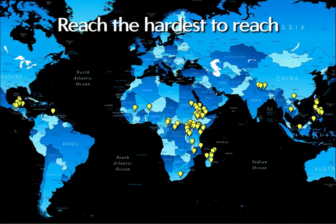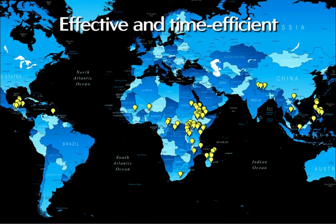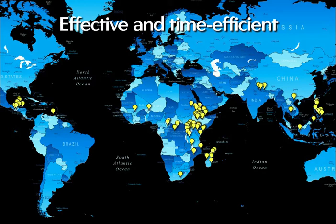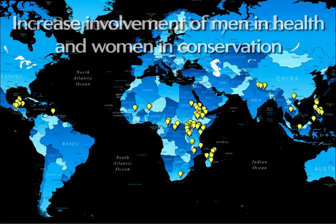PHE projects often work with people beyond the reach of health systems in remote and hard-to-reach areas. They have proven to be more effective than single-sector efforts, saving organizations and communities time. They are often more responsive to people's priority needs, thus gaining greater community support, and they often lead to greater involvement of men in health and women in environment and livelihood aspects of projects.